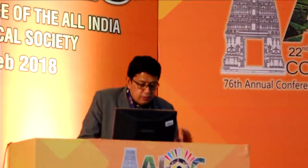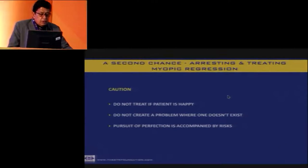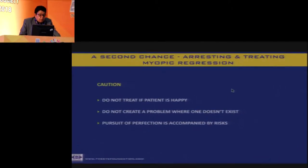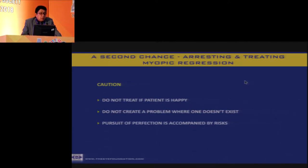Good morning, friends. The first thing I would like to emphasize: whenever taking up a retreatment, you have to exercise caution. Do not treat if the patient is happy. There are multiple occasions when a patient comes with no complaints but the optometrist writes down a 0.75 residual — maybe approaching presbyopic age, that might actually be good for them. Do not create a problem when none exists. If you have a satisfied patient...